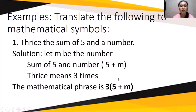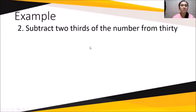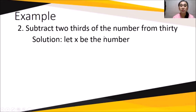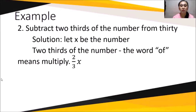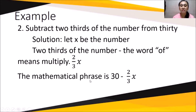Another example: 'subtract two-thirds of the number from thirty.' We use the word 'from thirty,' so we write thirty minus two-thirds of a number. Let x be the number. 'Two-thirds of the number' — the word 'of' means multiply — so two-thirds times x, or (2/3)x. Therefore, the mathematical phrase is 30 - (2/3)x.